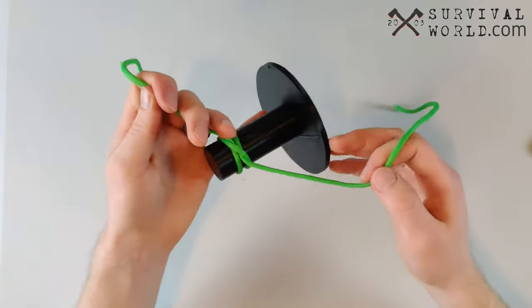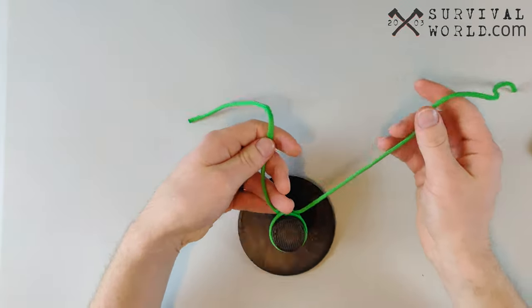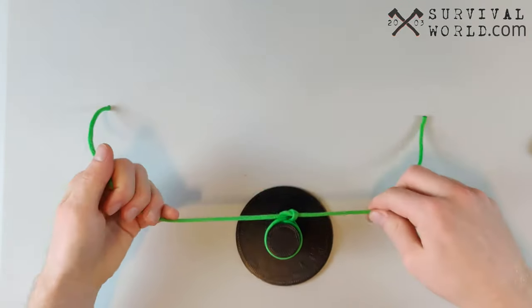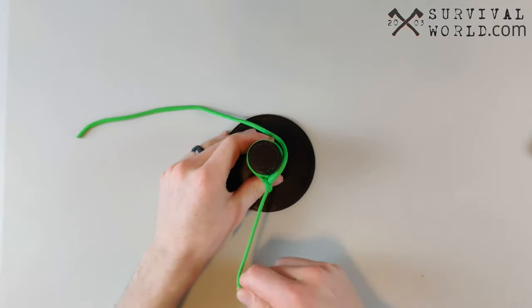A really quick way to get a more secure clove hitch after you've tied it is just to do a simple half hitch knot. That'll keep it a lot more secure and keep it from shifting side to side as much.